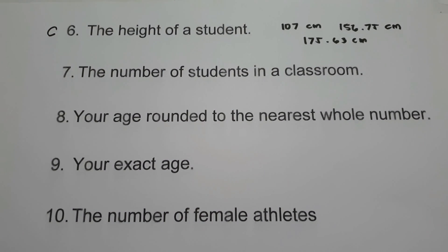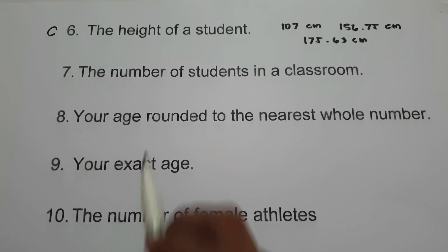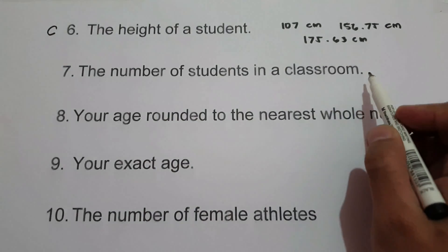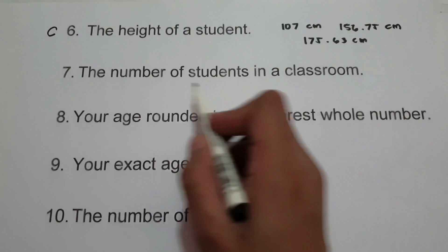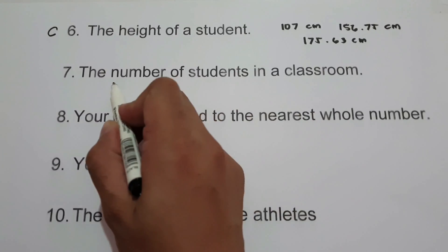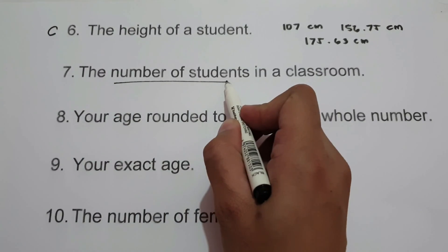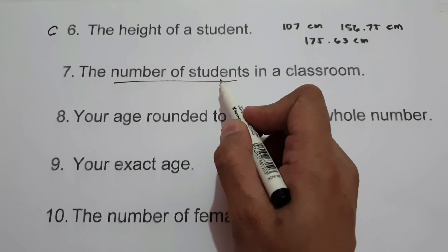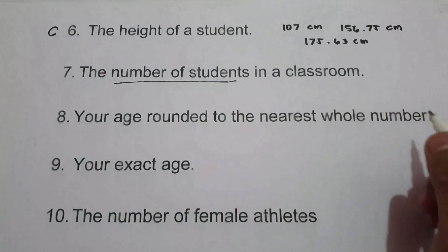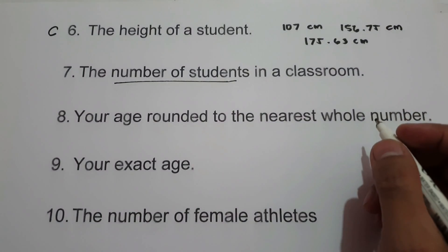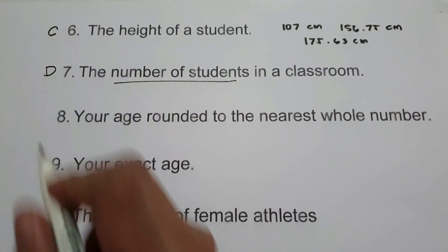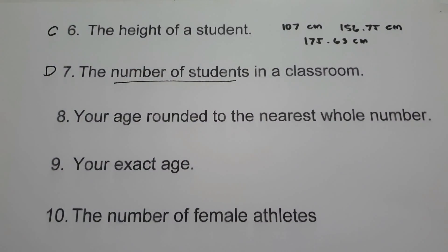What about number 7, the number of students in a classroom? How many students do we have in a classroom? We are talking about numbers, so it can be counted. Therefore, number 7 is an example of discrete random variable.